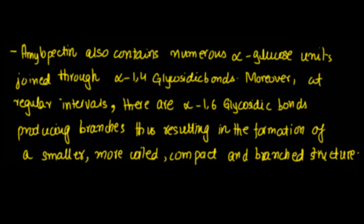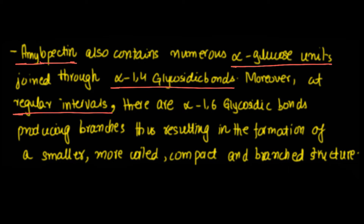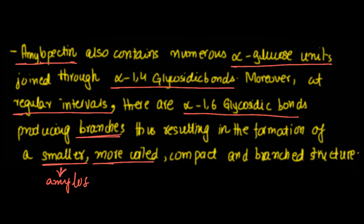Amylopectin contains numerous alpha glucose units joined through alpha 1-4 glycosidic bonds, and at regular intervals, alpha 1-6 glycosidic bonds produce branches. This results in the formation of a smaller, more coiled structure compared to amylose, and it is a branched chain structure. Remember: amylose is unbranched, while amylopectin is branched — these differences are very important.